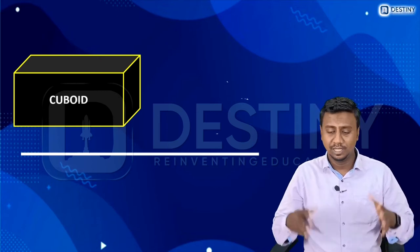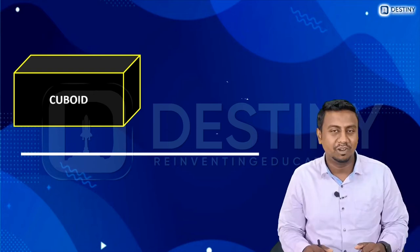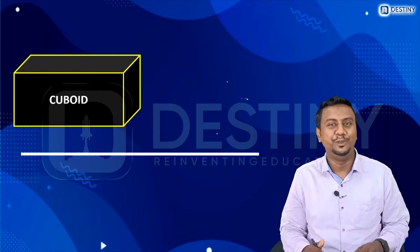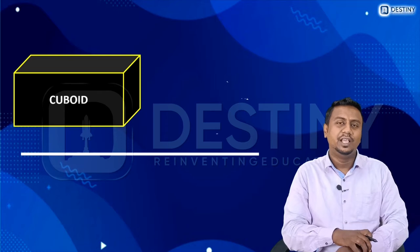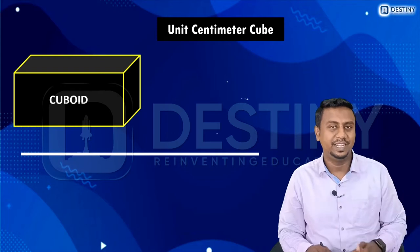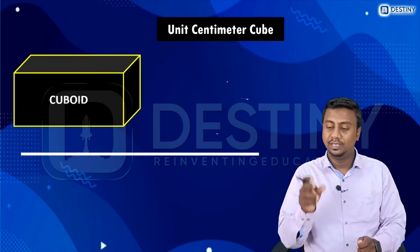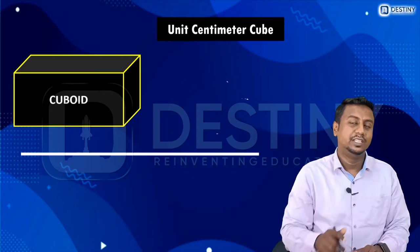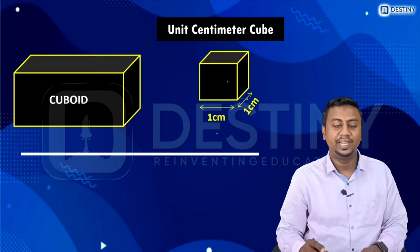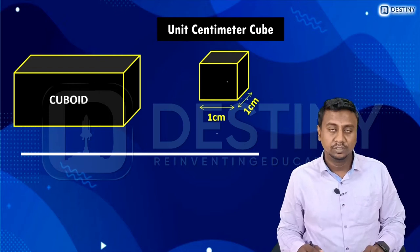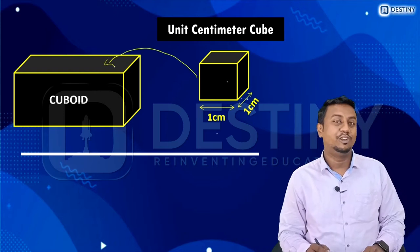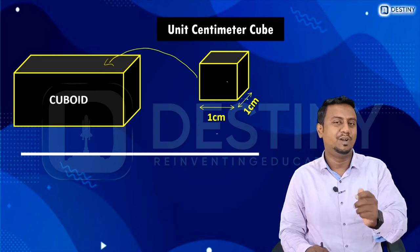The total space covered by six rectangles is called a cuboid. What if the total space is covered by six squares? That is a cube. The unit of volume is centimeter cube — a cube with length, breadth, and height all equal to one centimeter. You need to fill these unit cubes into a cuboid, and how many cubes you can fit in that cuboid determines its volume.